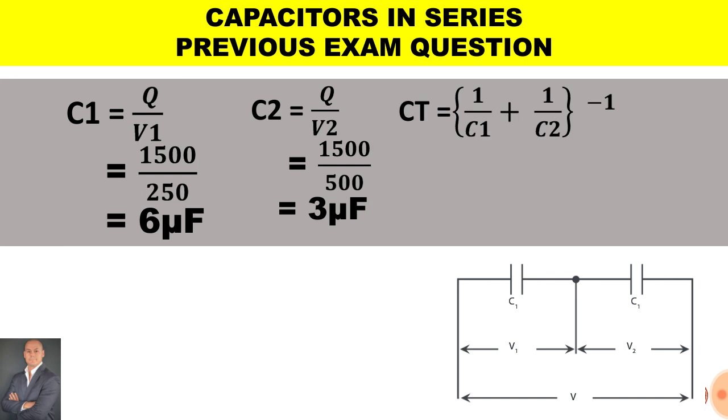Now to calculate the total capacitance, we say 1 over C1 plus 1 over C2 all to the power of minus 1 in order to invert the answer. 1 over 6 plus 1 over 3 to the power of minus 1 will give us a total capacitance of 2 microfarad.